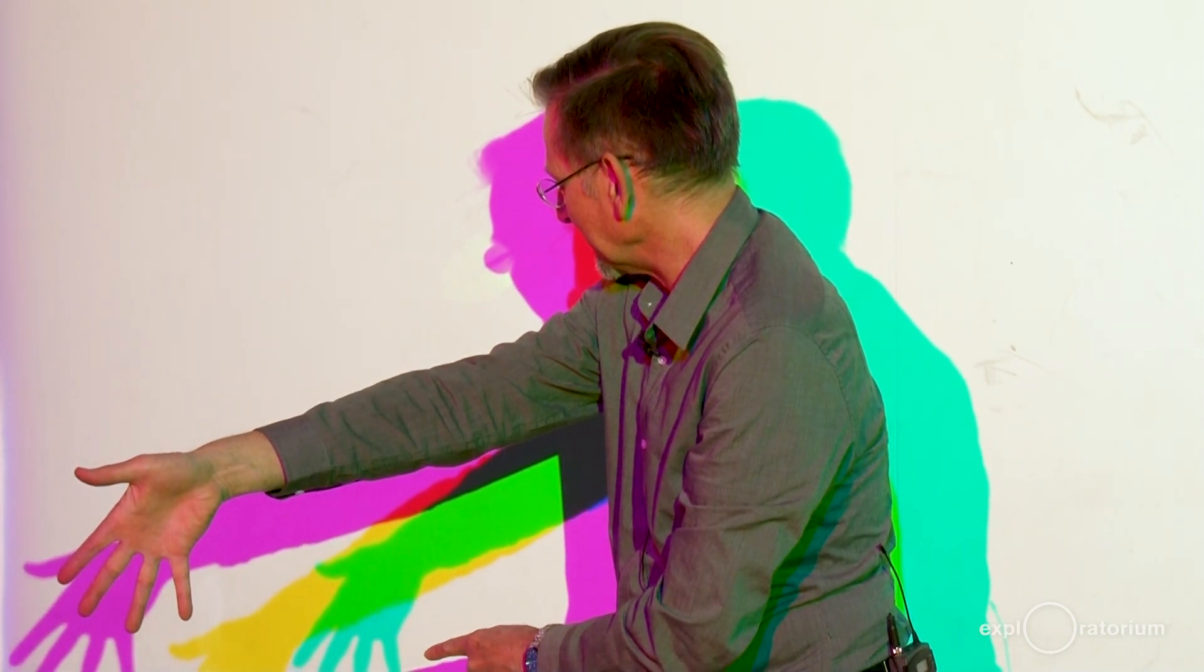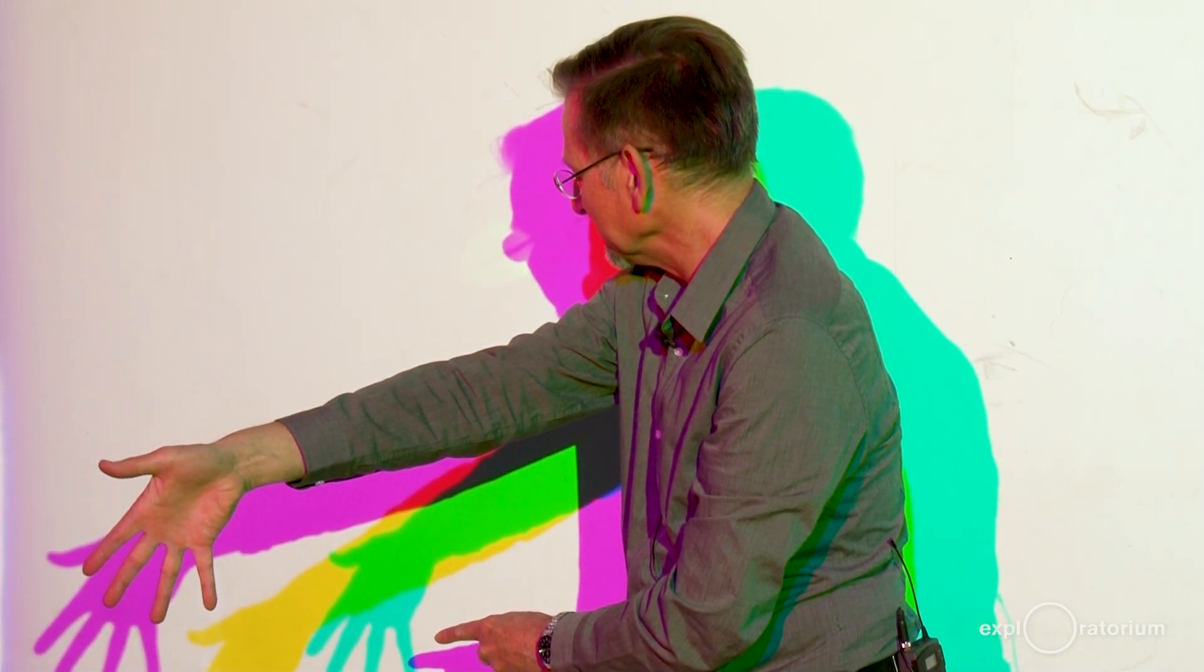I also have a cyan shadow. This is where I'm blocking the red light, the green and the blue combine.